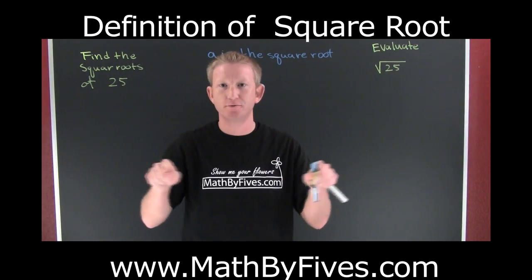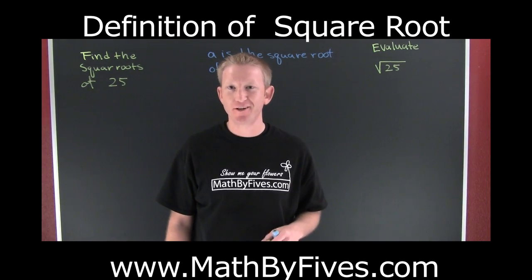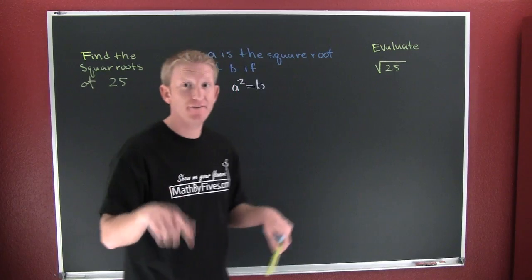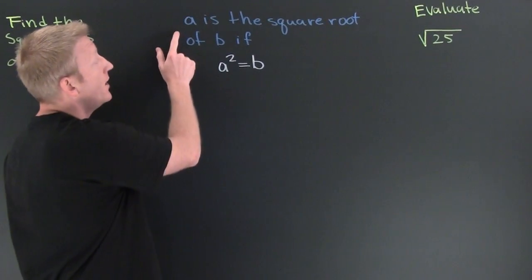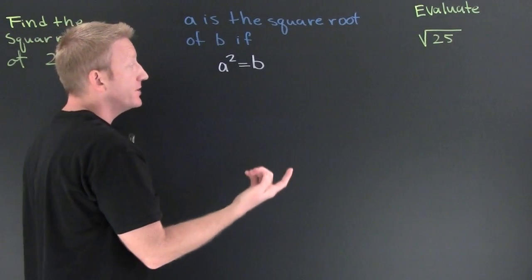You're so square! I'm talking about the square roots of a number. Let's go to a definition. The definition of square root: a is the square root of b if a squared is equal to b.